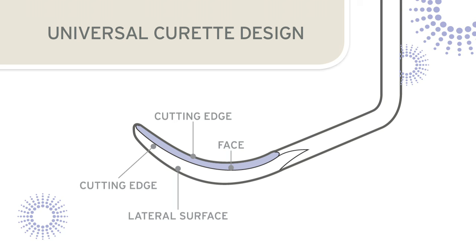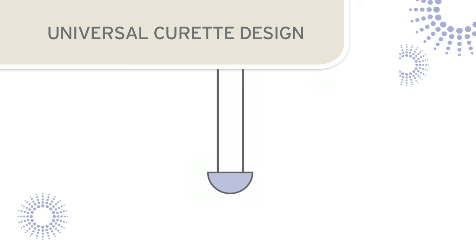The two cutting edges meet at the end of the instrument to form a rounded toe. The undersurface of this blade is rounded and the cross-section view reveals a semi-circle blade shape. The facial surface of the blade of a Universal Curette is positioned at a 90 degree angle to the terminal shank.